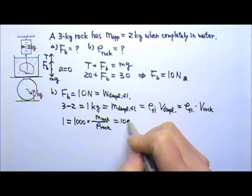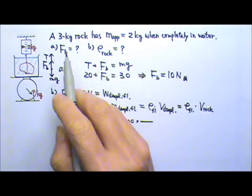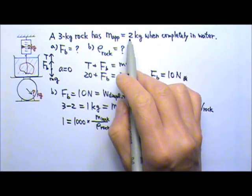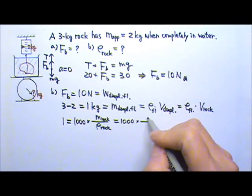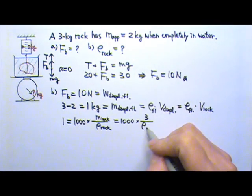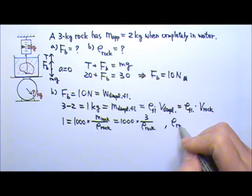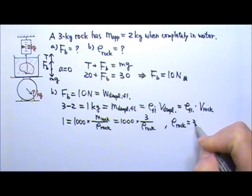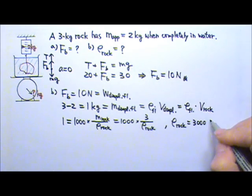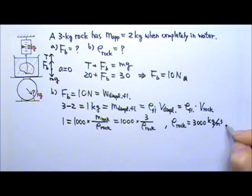We know that the mass of the rock is 3 kg. It's not the apparent mass, it's the real mass, 3 kg. And we're looking for the density of the rock. So 1 equals to this, we'll be able to find the density of the rock to be 3000. Everything is in standard units, so this must be kg per meter cubed. So this is the answer for part B.